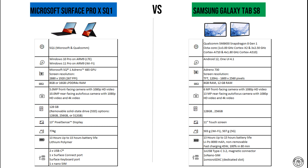For the cameras, the Surface Pro X SQ1 has a 5-megapixel front-facing camera with 1080p HD video, and a 10-megapixel rear-facing autofocus camera with 1080p and 4K video. The Samsung Galaxy Tab S8 features a 6-megapixel front-facing camera with 1080p HD video, and a 13-megapixel rear-facing autofocus camera with 4K video resolution.